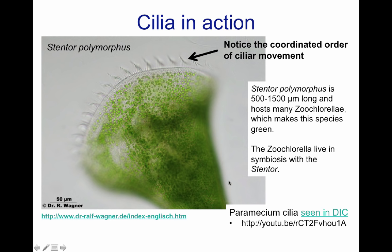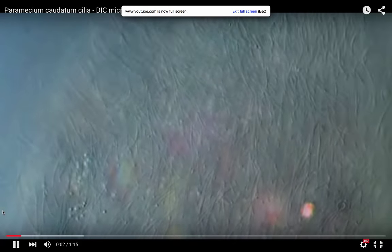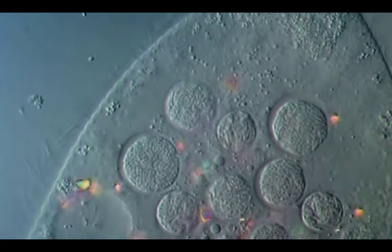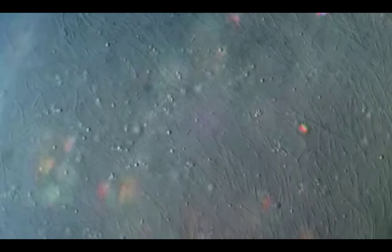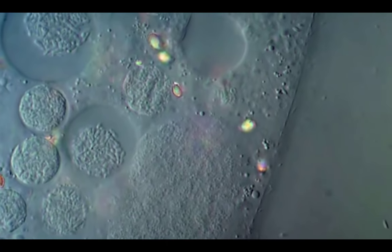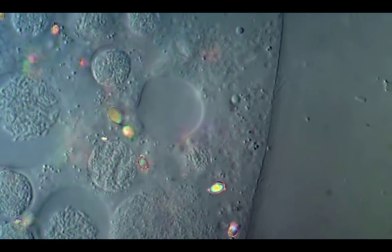Here is another movie showing the movement of cilia on the surface of a paramecium. The scientist is trying to put the cilia in the focal plane, and as you see, the cilia are pulsating with movement: power stroke, recovery stroke. The microscope is going in and out of the focal plane. Every time in focus, you can see the cilia moving — going down in the power stroke and coming up in the recovery stroke.